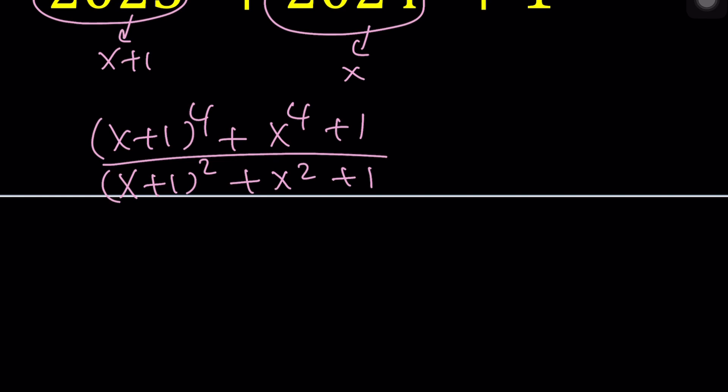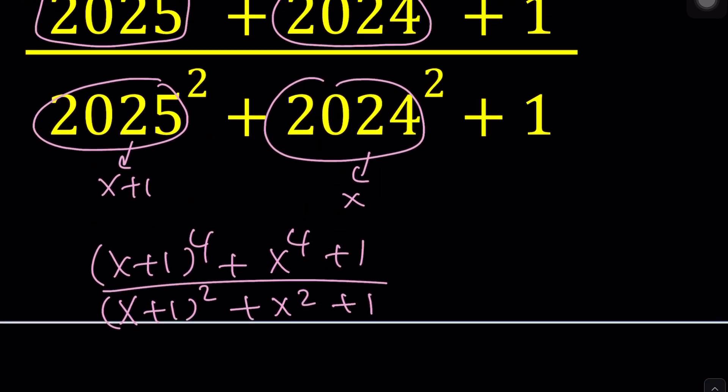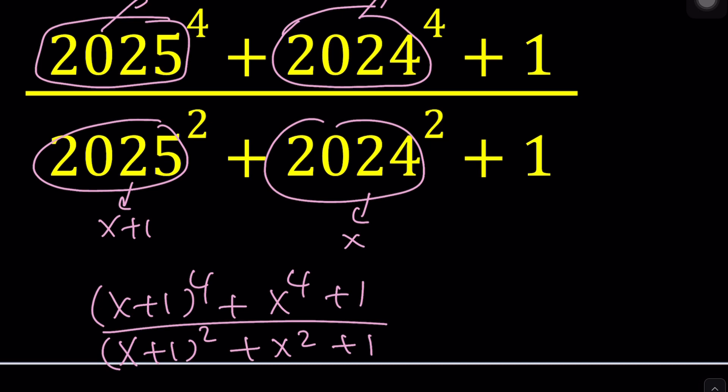So I'm hoping that we'll get a simple quadratic at the end, and then we can plug in x equals 2024 so that our answer will be fairly simple at the end because as is, this is quite complicated, right? Time-consuming at least.